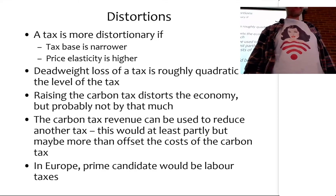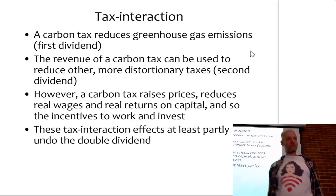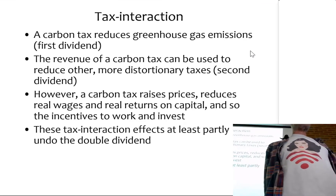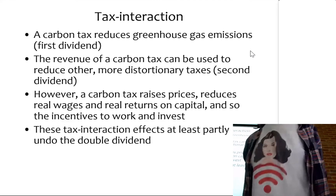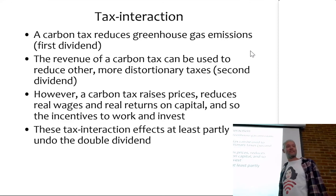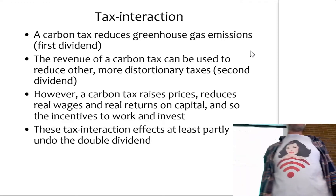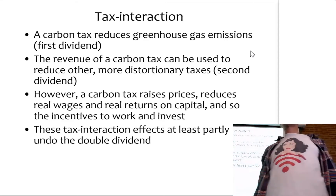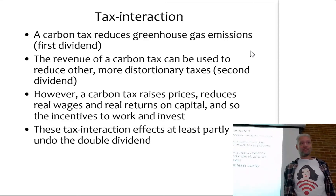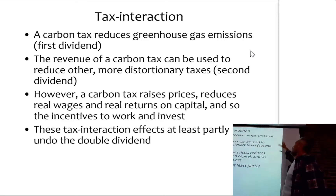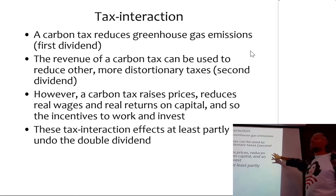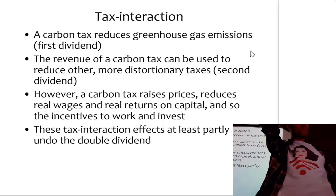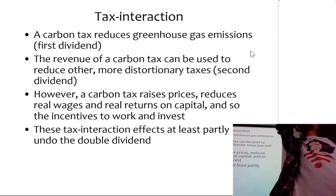People have called this the double dividend - but in fact there are three. The first dividend is that the carbon tax reduces greenhouse gas emissions. The second dividend is that we can use the carbon tax revenue to reduce other more distortionary taxes. But there is actually a third effect: the tax interaction effect.